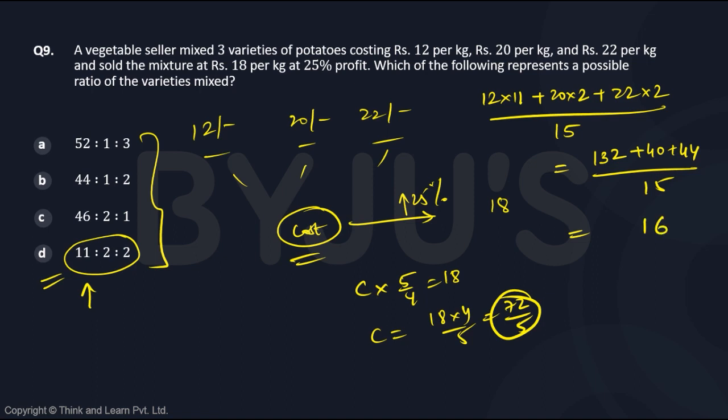So 216 divided by 15, 3 goes 5 times, 216 by 3 is 72, so 72 by 5, the same ratio. Hence, D is the correct answer.